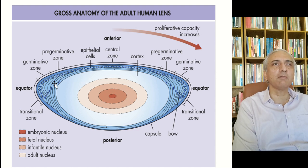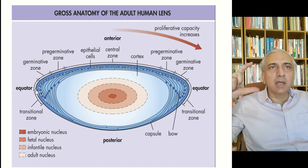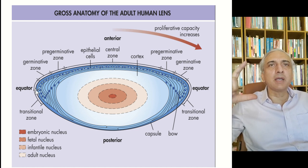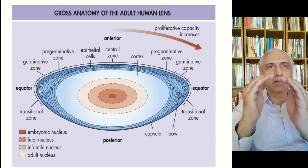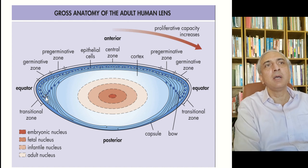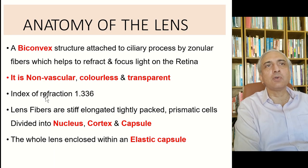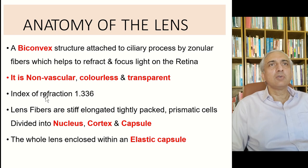Then you have a fetal nucleus, then infantile nucleus, then adult nucleus, and on the outside you have the cortex. The equator is the most important part of the lens — this is the area which is the factory for making new lens fibers. Lens fibers start from the periphery and keep going toward the center, similar to the bark of a tree. The lens epithelium transforms into elongated lens fibers.